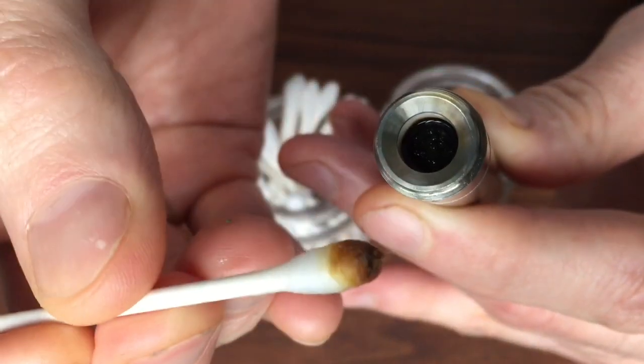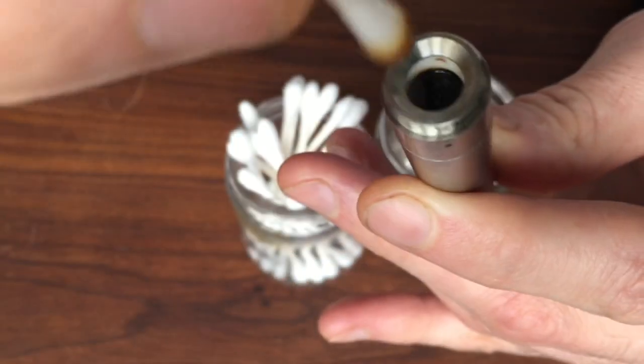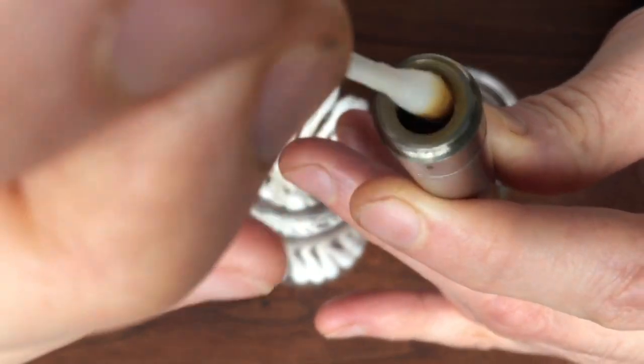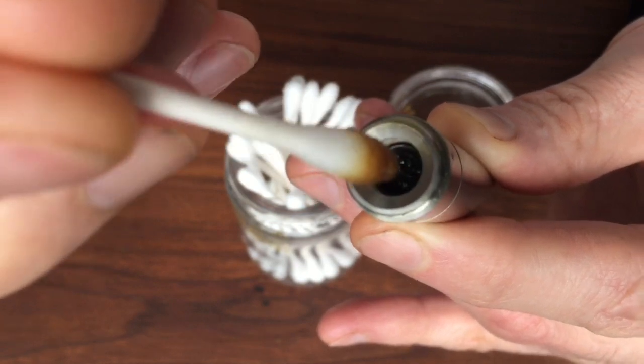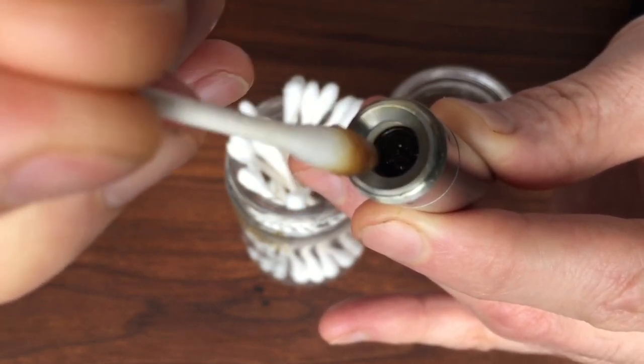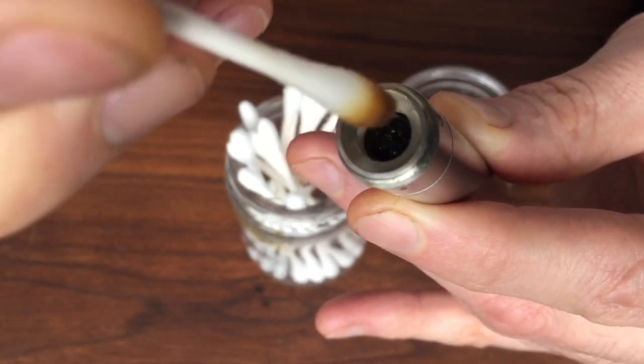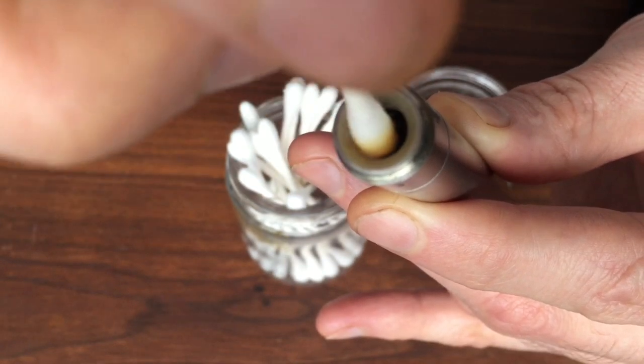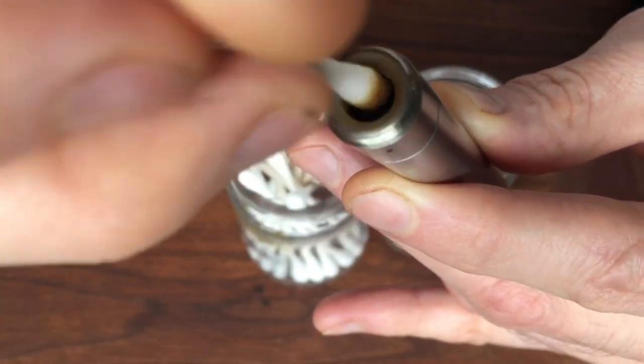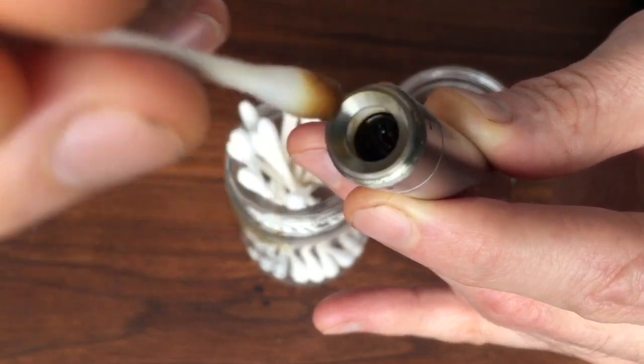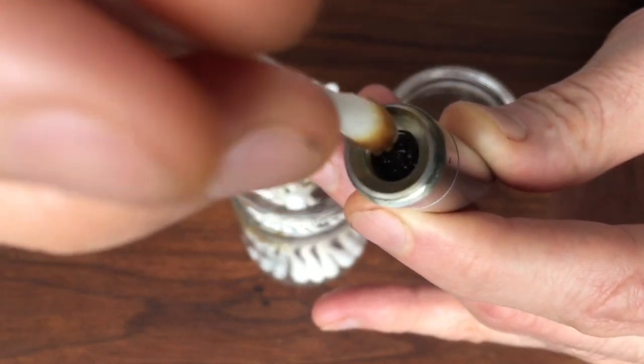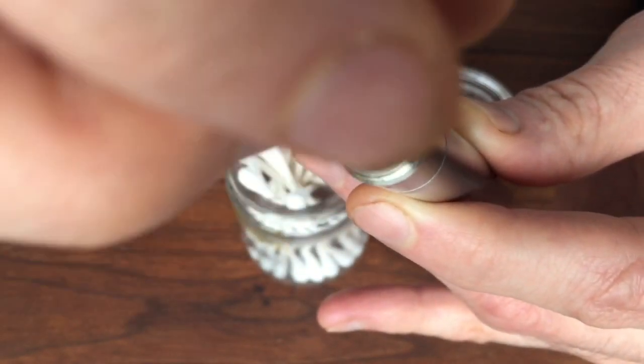As you can see, the Q-tip starts to get quite dirty. Make sure you go very gently as you move around because the ceramic disc down in the bottom here, this little puck, the heating element, it's held there with two little wires. If you push too hard or try to push down in there, you'll surely break that free and it's definitely not fixable.